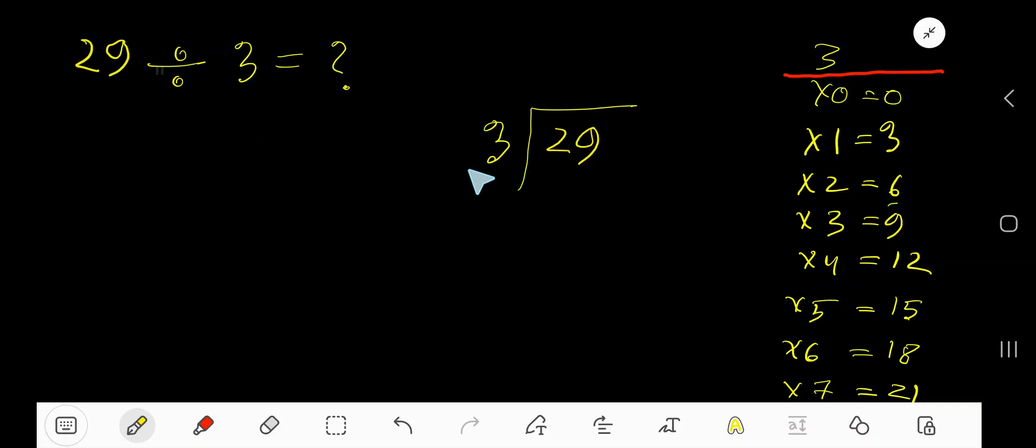29 divided by 3. Here 3 is a divisor, so we need the multiplication table of 3. 3 times 0 is 0, 3 times 1 is 3, 3 times 2 is 6, 3 times 3 is 9, 3 times 4 is 12, 3 times 5 is 15.